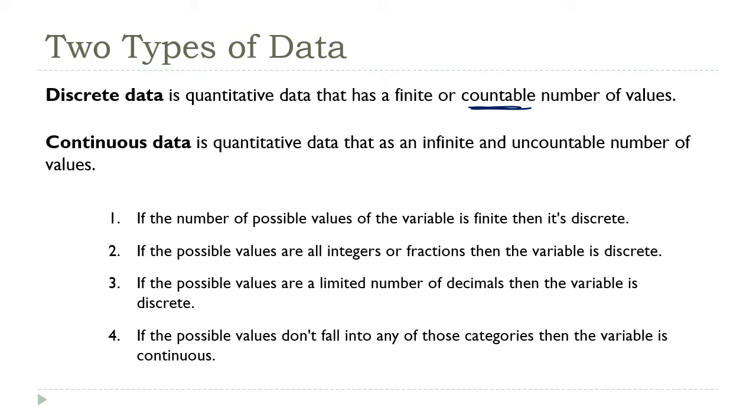If there are a limited number of decimal values, like you would see when talking about a dollar amount, then the variable is discrete. Now, if none of those criteria are true, then the variable is continuous.